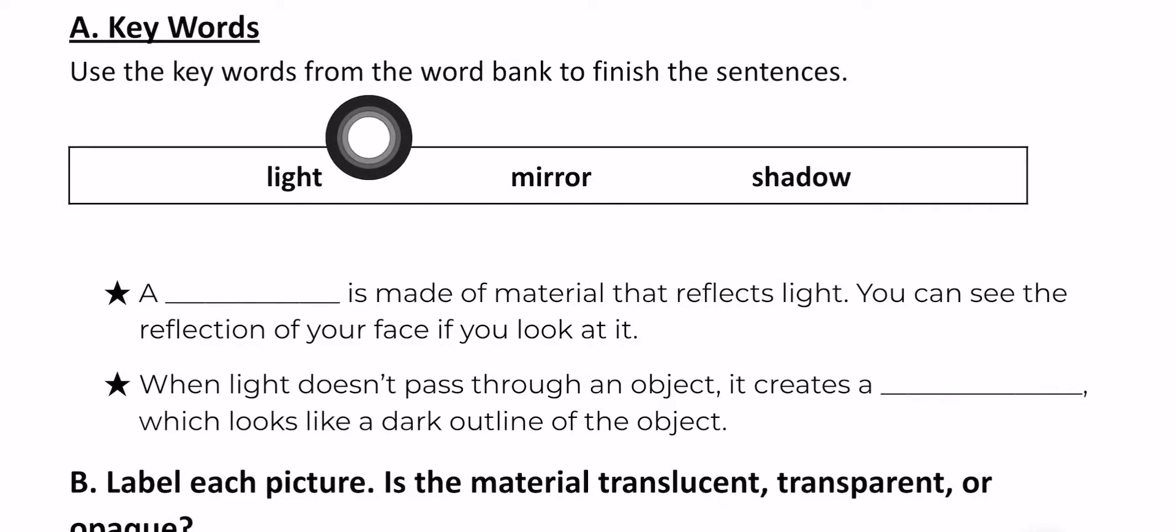Part one, A. Keywords. Use the keywords from the word bank to finish the sentences: light, mirror, shadow. So your answers should be chosen from this one. A blank is made of material that reflects light. You can see the reflection of your face if you look at it. What is this? Is it light, mirror, or shadow? You can pause it or replay it if you didn't get it. When light doesn't pass through an object, it creates a blank, which looks like a dark outline of the object. When we say object, it means thing.